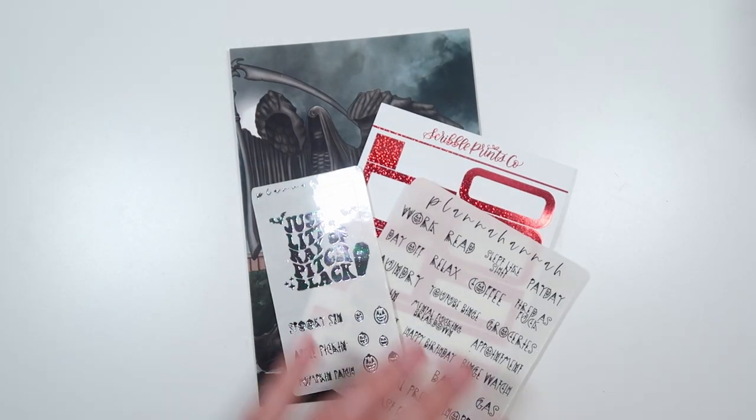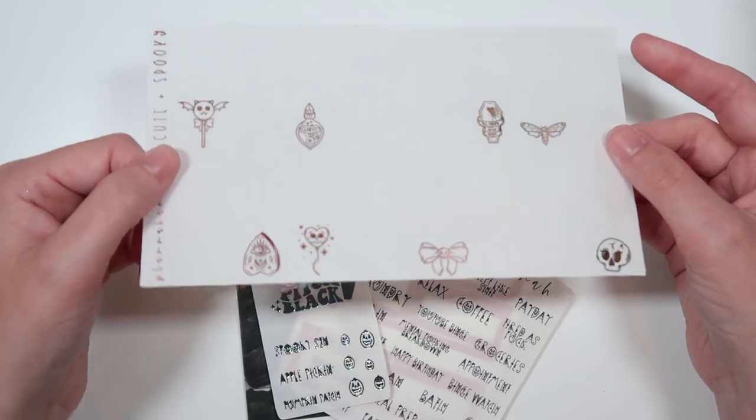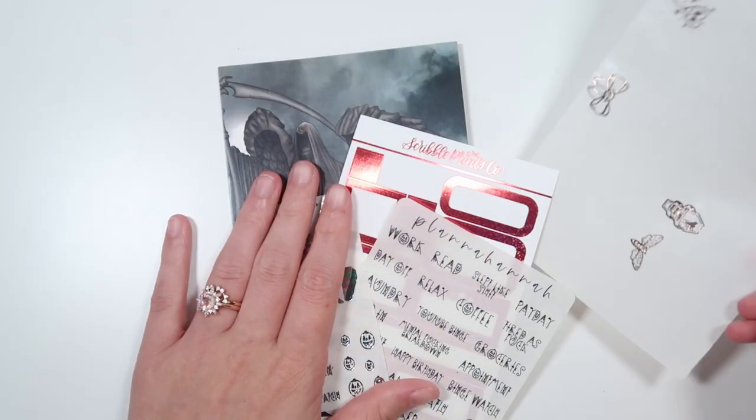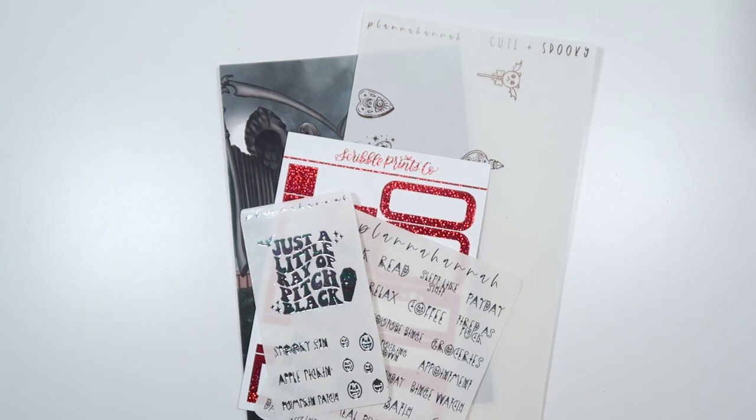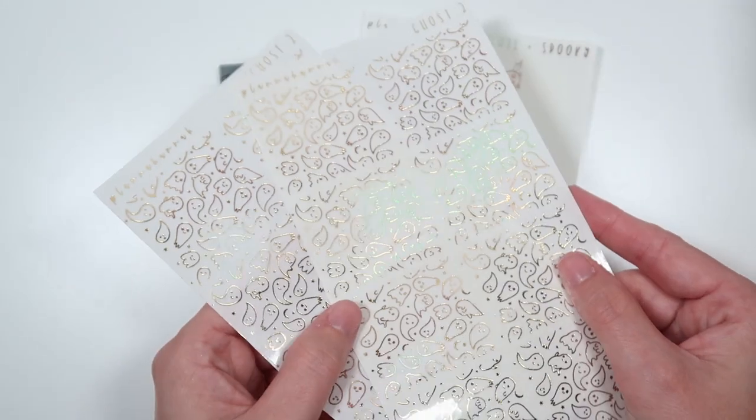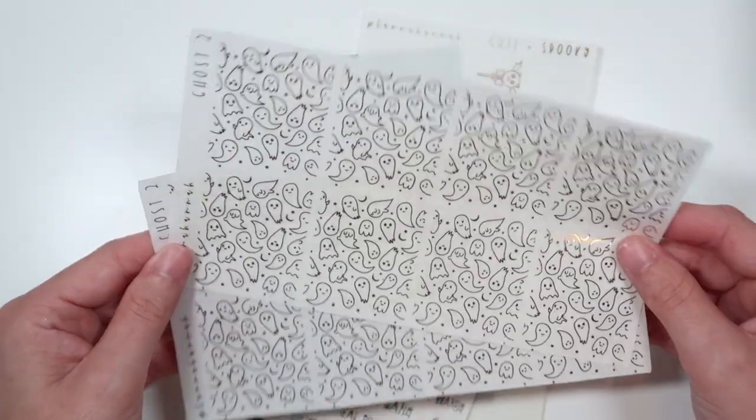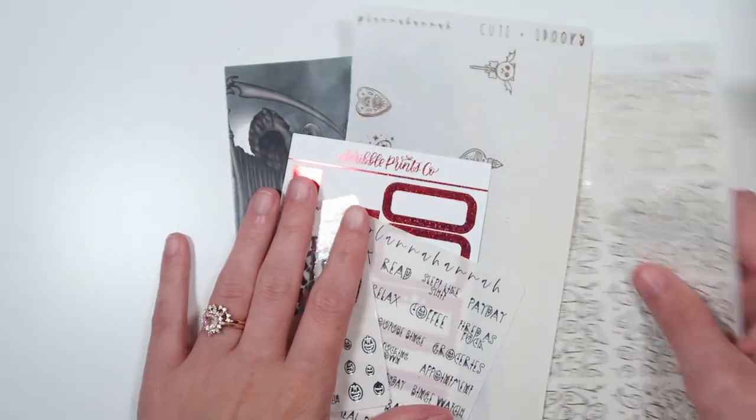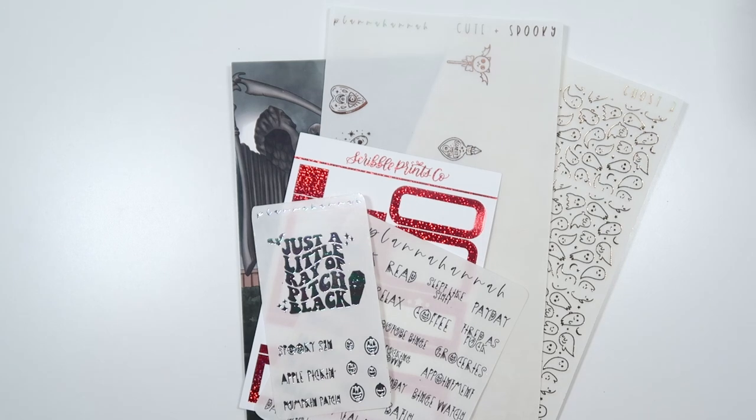For $100 plus you will get the September script sampler. For $150 you will get all these things as well as a cute and spooky overlay in a random foil color. This is being shown in rose gold. And then for $200 you will get all of those things as well as a set of the Ghost 2 underlays in a random foil color. These are being shown in regular gold. So those are the standard September freebies.